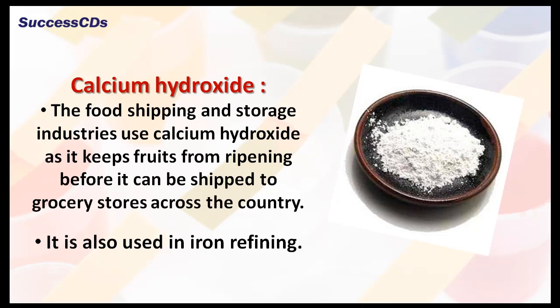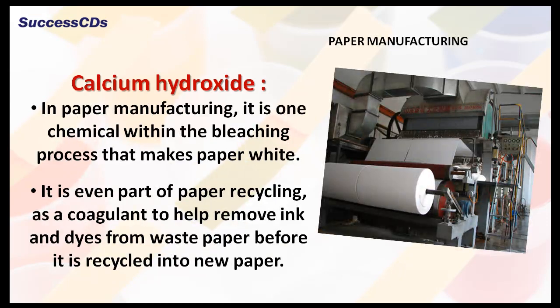Calcium hydroxide is also used in iron refining. It is also used in the paper manufacturing industry as it is one chemical within the bleaching process that makes paper white. It is even part of paper recycling as a coagulant to help remove ink and dyes from waste paper before it is recycled into new paper.